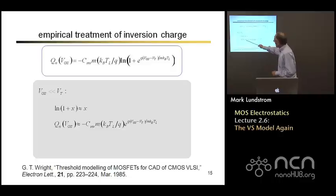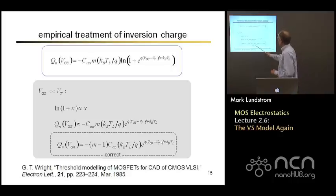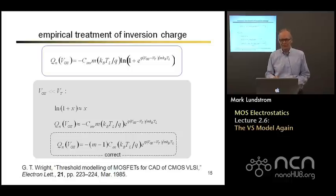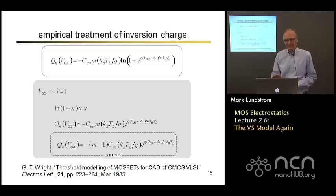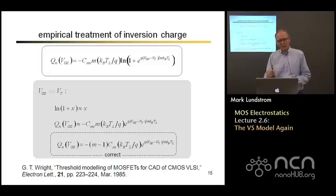If I compare that to the correct answer, it's not quite correct. We get an M here instead of an M minus 1, but it's close. The important point is that it got the exponential dependence properly. The pre-exponential factor isn't quite right, but in practice that would be a small effect that we can tweak some parameters and deal with.